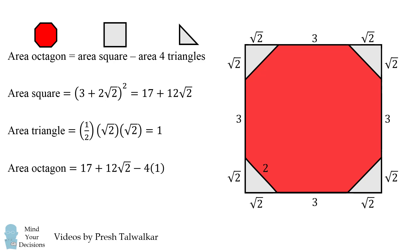So the area of the octagon will equal the area of the square minus 4 times the area of a triangle, and this simplifies to be 13 plus 12 times the square root of 2, and that's the answer. Did you figure it out?